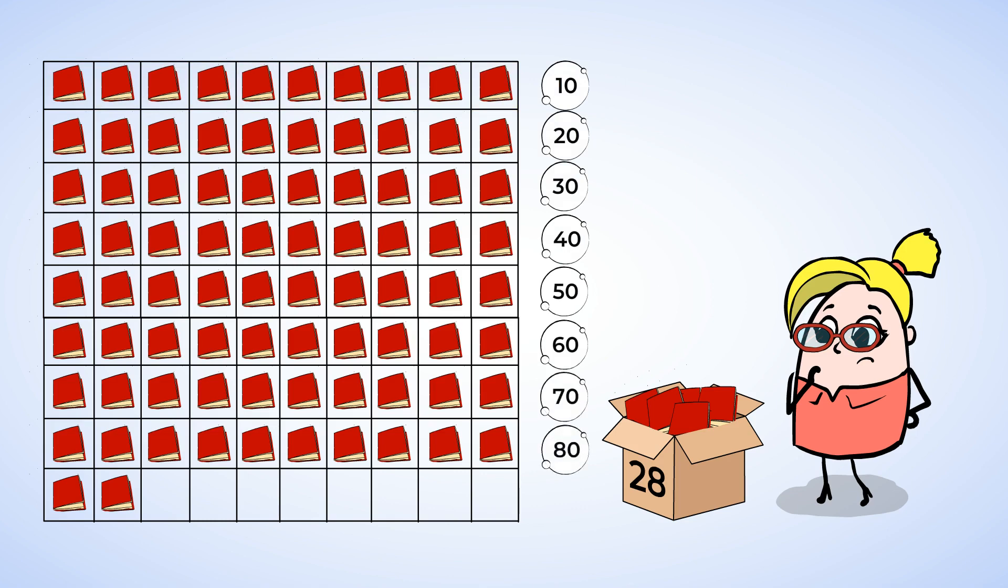Let's write the number 80 and count on the last notebooks. 81, 82. Huh, there are 82 notebooks. Aha, there was a mistake on the box. Instead of writing an 8 and then a 2, somebody wrote a 2 and then an 8. They wrote 28 instead of 82.